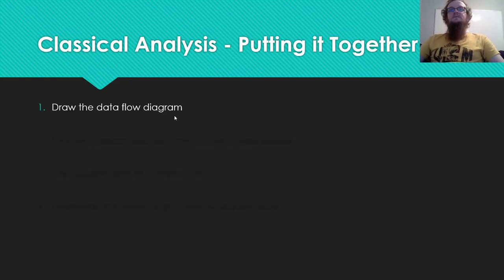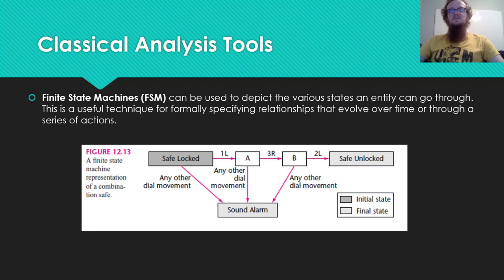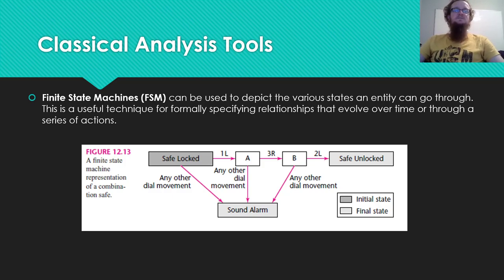To put classical analysis all together: there are many different tools covered in Chapter 12 of the textbook. I'm not going to cover them all here — many are esoteric and don't get a lot of usage now. But if you're interested, Chapter 12 has a lot of information and is one of the better chapters in the book. You might want to take a look to see if something there might be helpful for your group project.